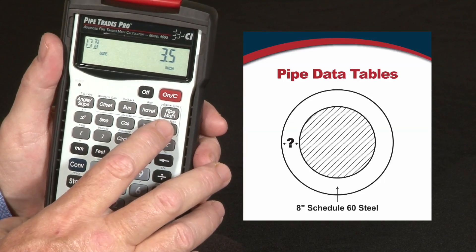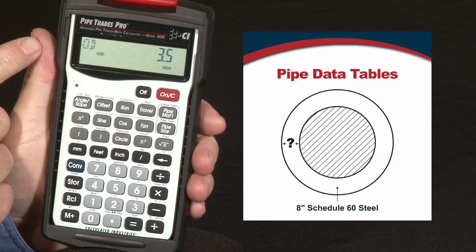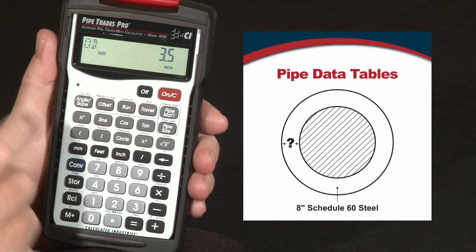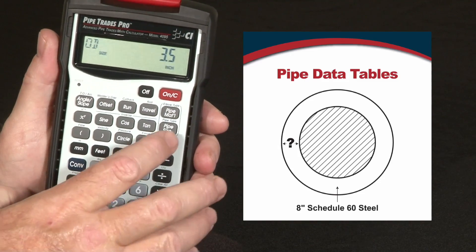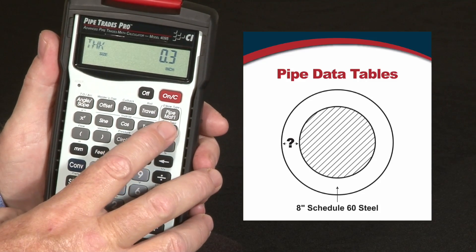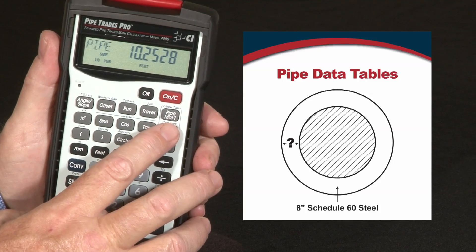The data included in the calculator for that particular material type and size includes the outside diameter, the internal diameter, the thickness, and the material — steel.